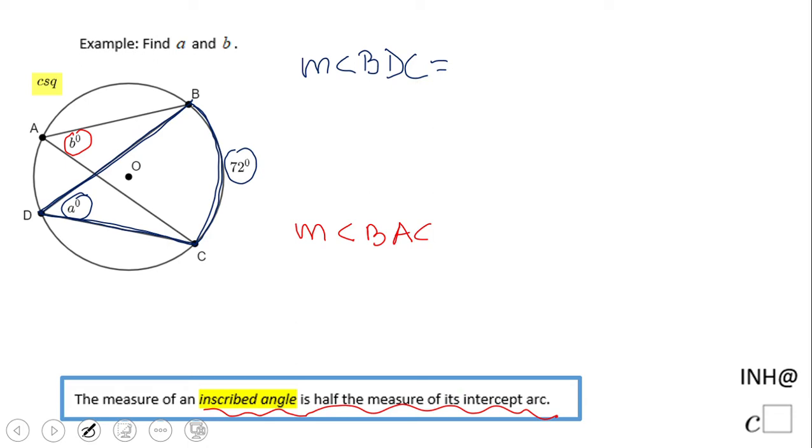The measure of angle BDC is half of the arc BC. If we replace the measure of arc BC, 72, we end up with the answer we're looking for, which is 36.